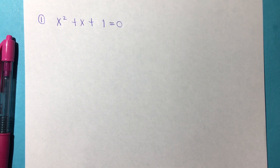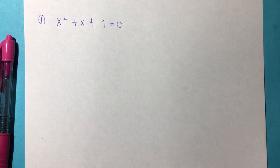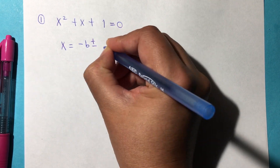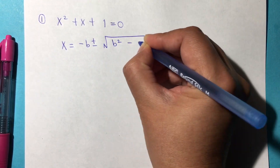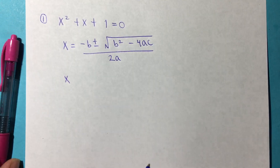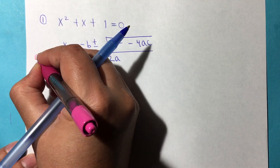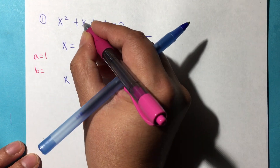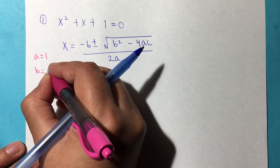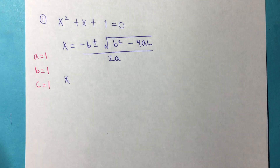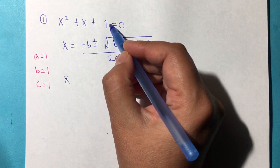What does that mean? It just means that you are going to have an imaginary number in the roots or solutions. So what is the quadratic formula? If you remember, it's x is equal to negative b plus or minus the square root of b squared minus 4ac over 2a. And again, a is always with x squared. So in this case, since we don't have a coefficient, a is 1. B is the coefficient of x with no exponent — it's also 1. And c is also 1; it's the constant. It will always be by itself with no variable.